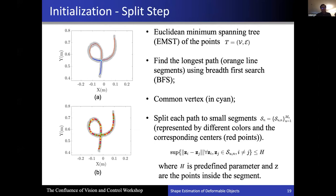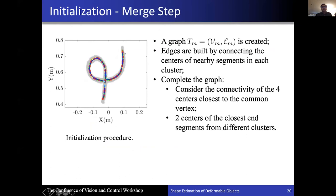There is an initialization process before the expectation-maximization step. We first perform simple background subtraction. Then we use an EMST algorithm to find long connected paths using a breadth-first search method. If there is an intersection, we identify the common vertex. Along each path, we split the data into smaller segments, which are then connected to form an initial graph used as initialization to the EM algorithm for estimating the shape.